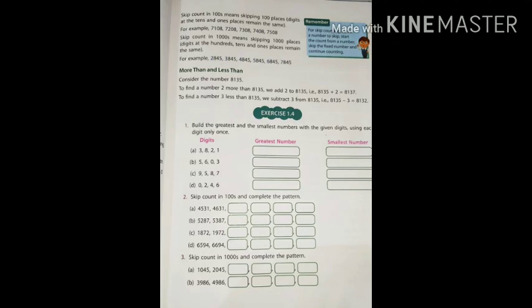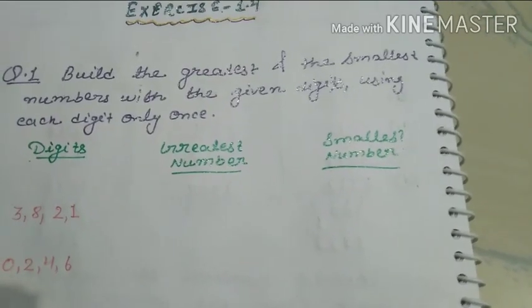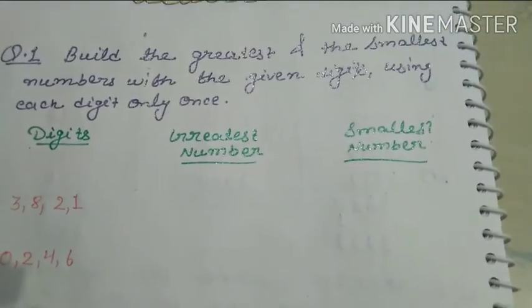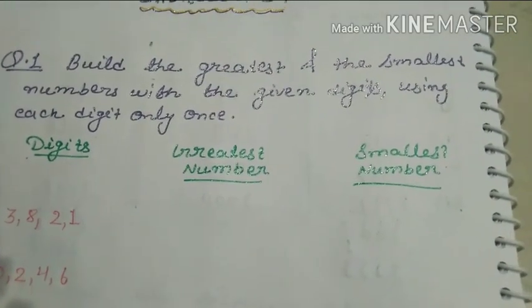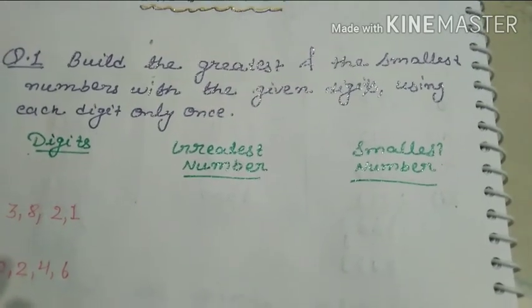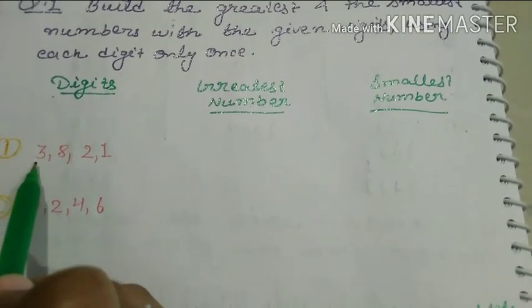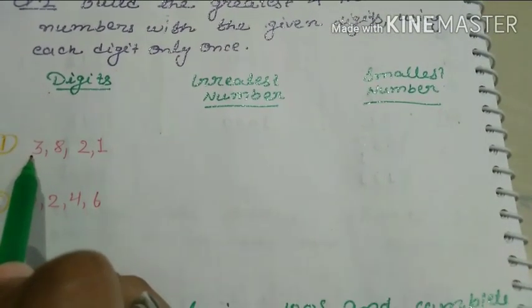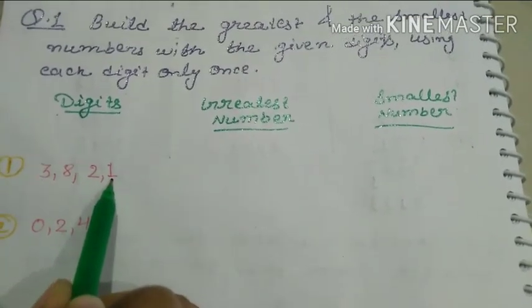Now let's do Exercise 1.4. Question 1: build the greatest and smallest number with the given digits, using each digit only once. The first set of digits is 1, 3, 8, 2, and 1.